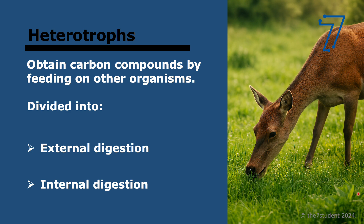Heterotrophs do not make their own carbon compounds. They obtain carbon compounds from other organisms by feeding. They then digest those compounds and use the products to build larger complexes — that process is called assimilation. Heterotrophs can be subdivided by whether they digest internally or externally. Consumers digest internally, while saprotrophs digest externally.